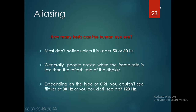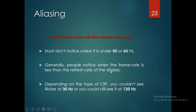So what is meant by aliasing? Before going to discuss about aliasing, first of all we should know how many frames per second the human eye can see. Most people don't notice unless it is under 50 or 60 hertz. If the frequency is below 50 to 60 hertz, we cannot perceive flicker. Generally, people notice when the frame rate is less than the refresh rate of the display.